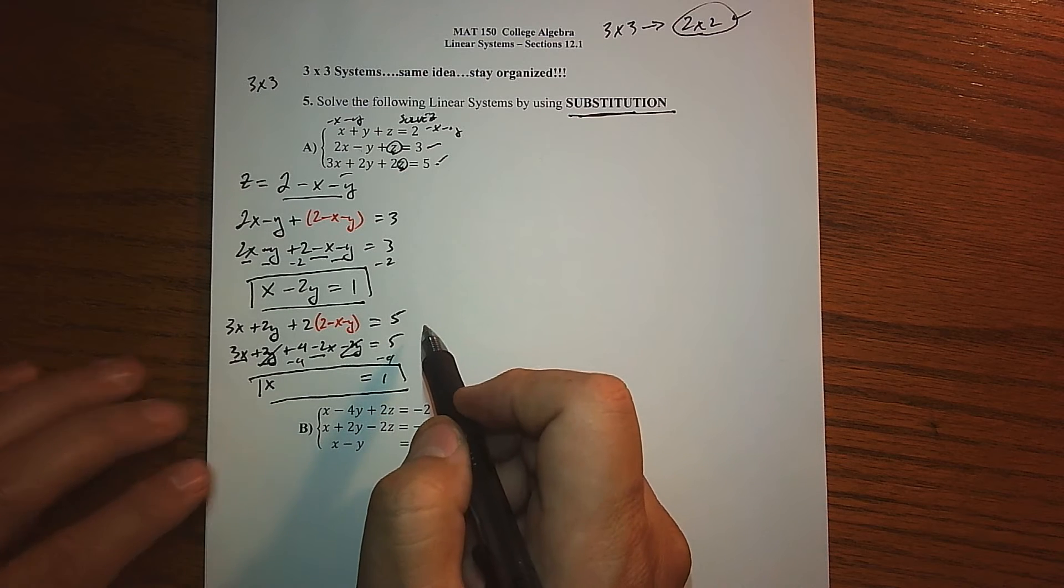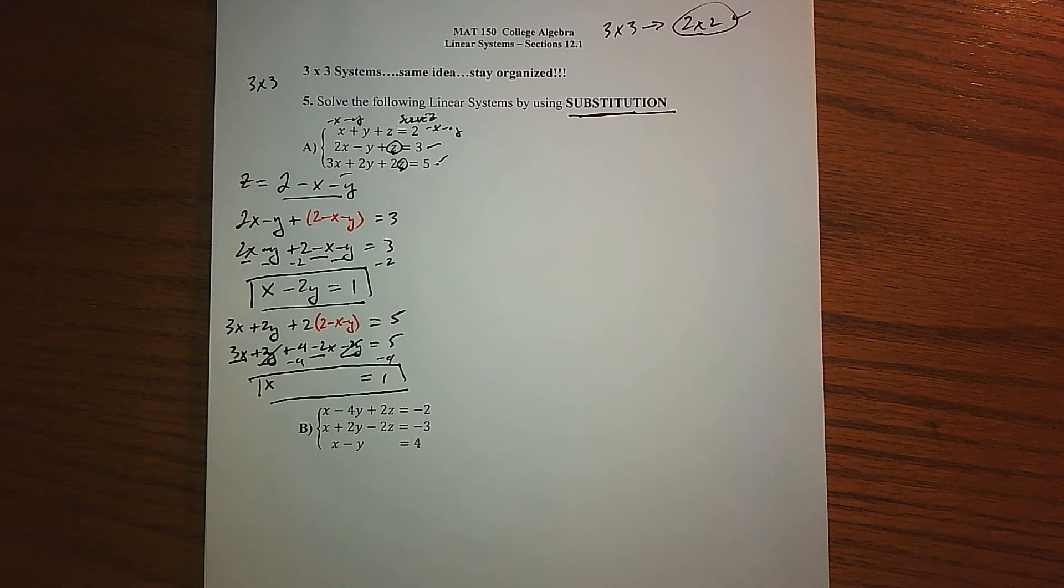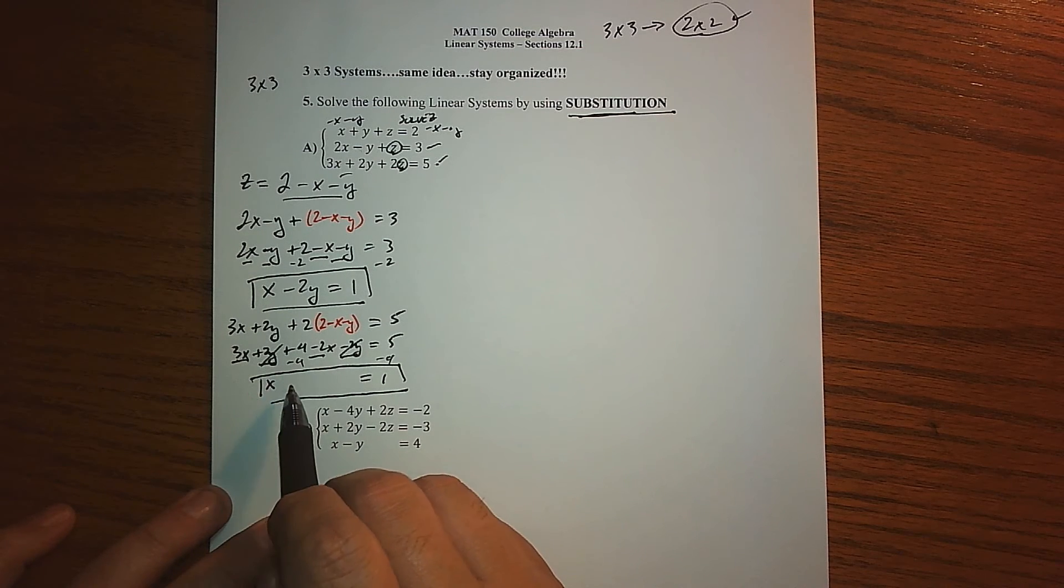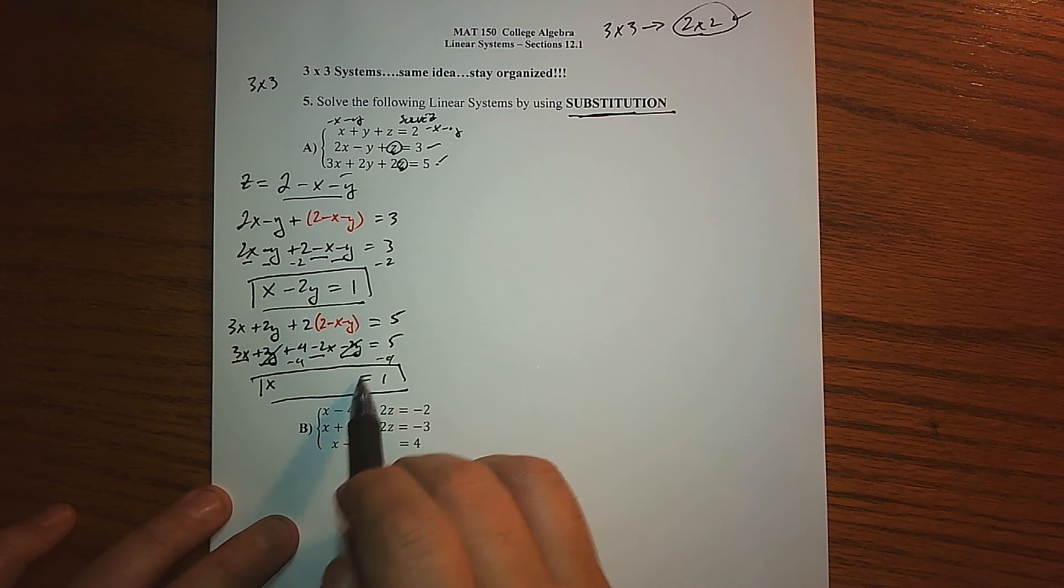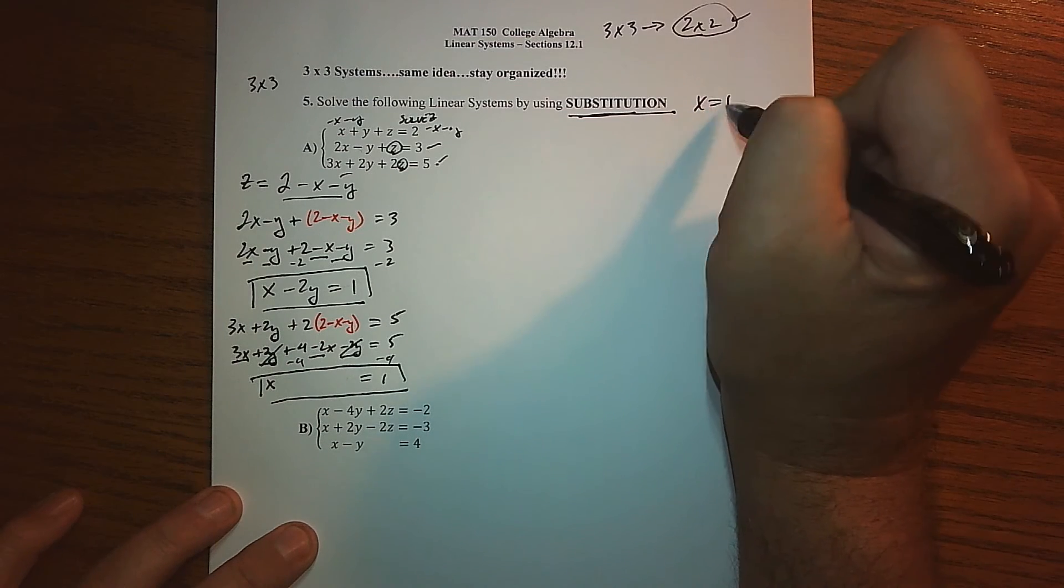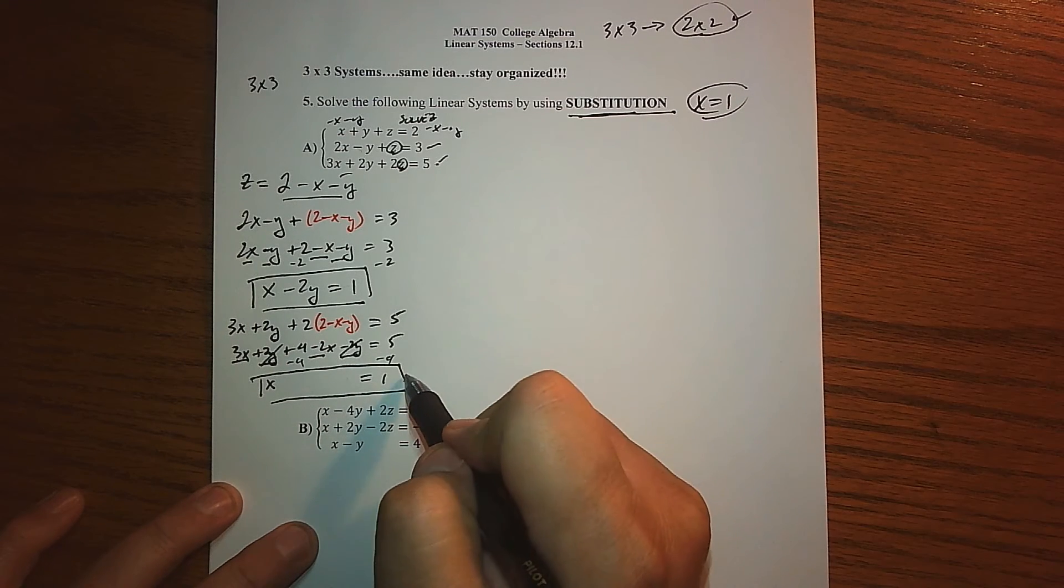If we subtract 4 from both sides, we end up getting X equals 1. So we got very lucky here, because it turned out that as we did our substitution technique, one of the equations actually went away. Under normal circumstances, one of our variables won't go away and we'll have a two by two system, but this is really nice.